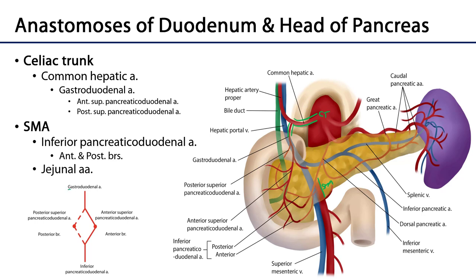Down here in the lower corner is our gastroduodenal artery. The gastroduodenal artery has several branches, but specifically pertaining to this region, it's going to give off a posterior superior pancreaticoduodenal and an anterior superior pancreaticoduodenal. These branches are going to supply the duodenum and the head and neck of the pancreas with blood. Their counterparts are going to come from a branch of the SMA known as the inferior pancreaticoduodenal artery, which will divide into anterior and posterior branches, anastomosing with the anterior and posterior superior pancreaticoduodenal arteries. This provides a very rich framework of blood to the head and neck of the pancreas as well as the duodenum.